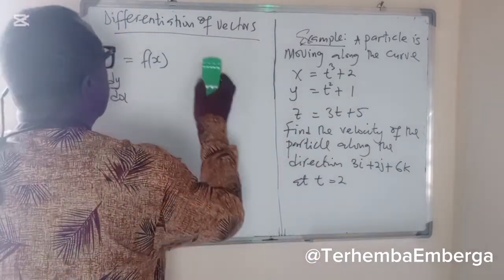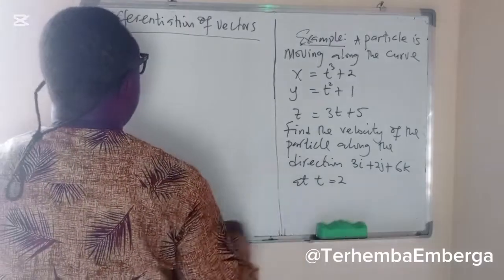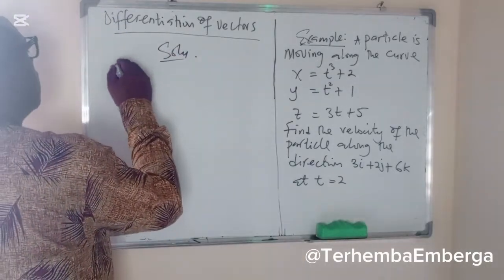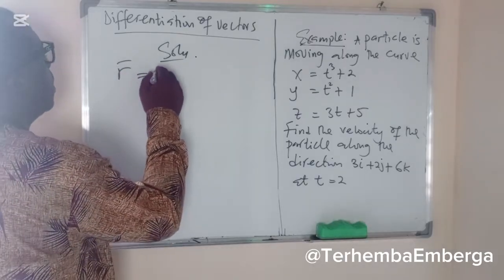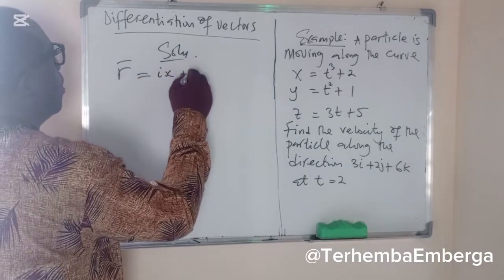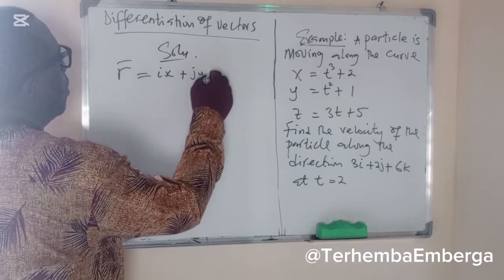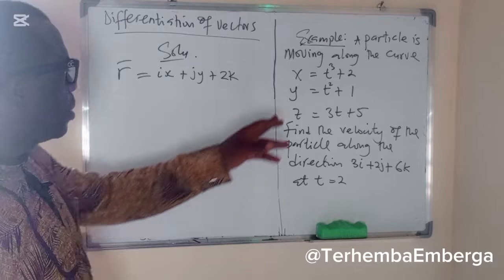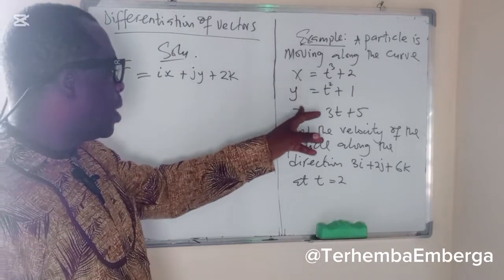So, if we take the position vector, which is ix plus jy plus zk. Remember this, we have three components here, the x, y, z.